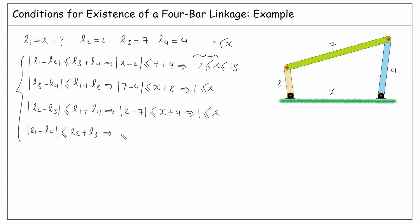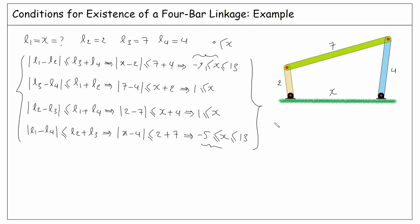The fourth condition: the absolute value of L1 minus L4 must be less than or equal to L2 plus L3. So the absolute value of X minus 4 must be less than or equal to 2 plus 7, giving X between minus 5 and 13. Again, we don't need the negative part since X is greater than 0. Finally, the intersection of all these conditions says the length of the base link must be between 1 and 13 for the linkage to exist.